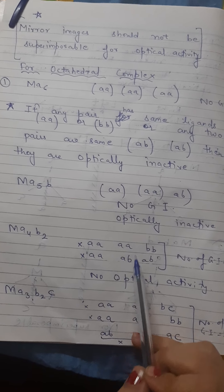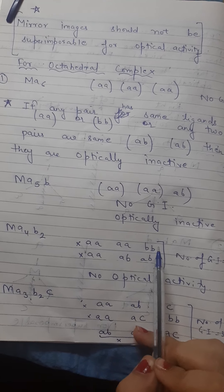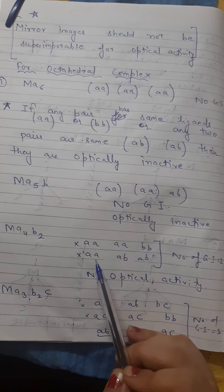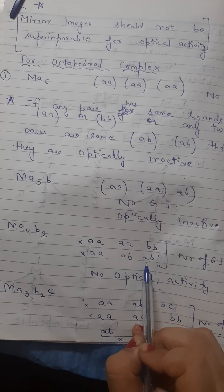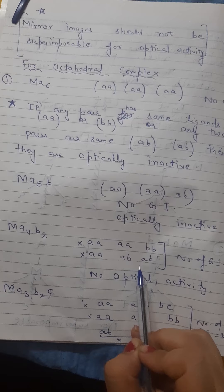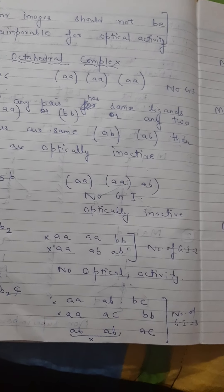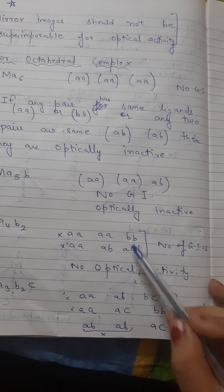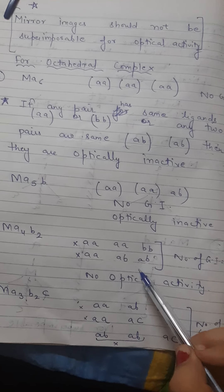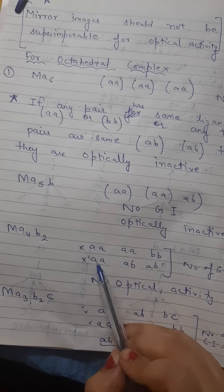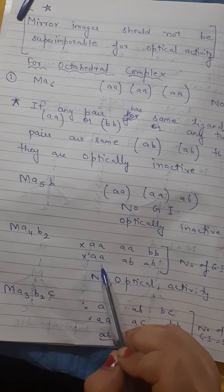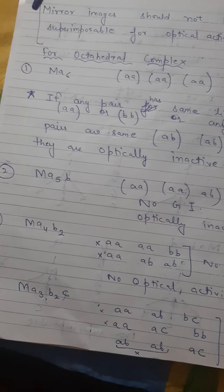MA4B2 - combinations AAABB and AAAABB. These two combinations give two geometrical isomers, but no optical activity because ligands have same pairs, no optical activity.